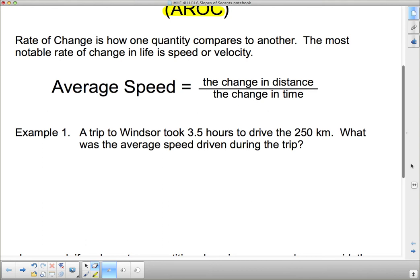Example 1: A trip to Windsor took 3.5 hours to drive 250 km. What was the average speed driven during the trip? So the AROC, the average rate of change which is speed in this case, is the change in distance over the change in time. The change in distance is 250 kilometers, the change in time was 3.5 hours. Which means that this particular trip to Windsor, my average speed was 71.4 kilometers an hour.